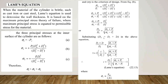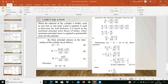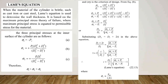Substituting the value DO equals DI plus 2T into the above equation, we get the wall thickness formula: T equals (DI / 2) times [square root of (sigma-T plus PI) divided by (sigma-T minus PI) minus 1]. This is Lame's equation, where sigma-T equals ultimate strength divided by factor of safety.